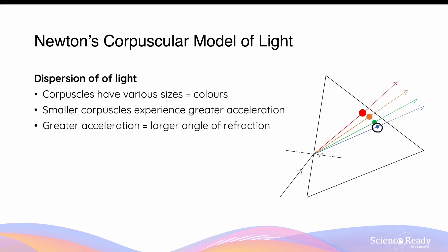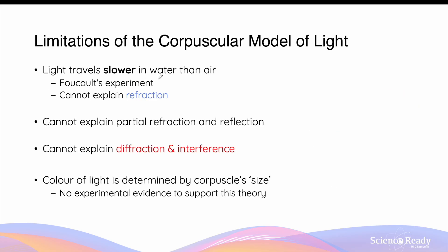It is important to note that Newton's model has a number of limitations. First, light actually travels slower in water than in air, which contradicts what Newton had previously hypothesised. This finding was produced by Foucault's experiment on the measurement of the speed of light, which is discussed in more detail in another video. As a result, the corpuscular model of light fails to explain the phenomenon of refraction. Light also exhibits a phenomenon called partial refraction and reflection, whereby some of the light is reflected and the remainder is refracted, and the corpuscular model also failed to address this phenomenon.